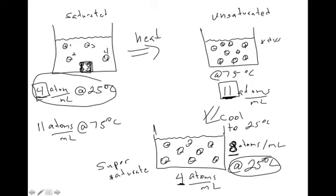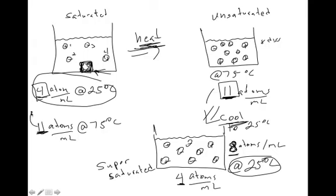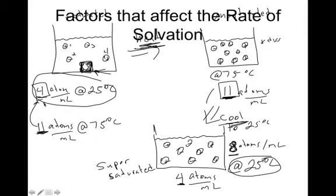The only way to get to a supersaturated solution is to undergo a heat-cool process — we heat it, and then we cool it back down. We heat it to get the undissolved solute to dissolve, and then we cool it back down to bring the solubility back down from 11 to 4.